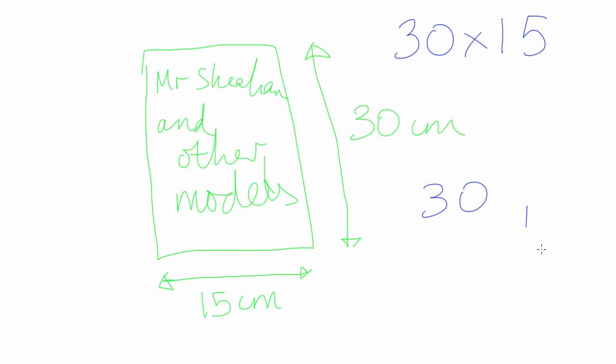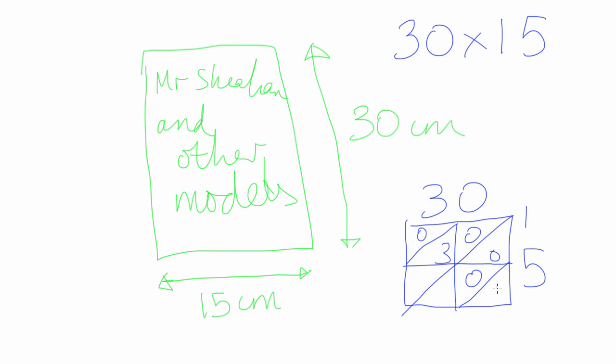Let's get our trusty lattice. Not going to get this one wrong, I hope. 30 times 15 equals 450cm squared is the area.